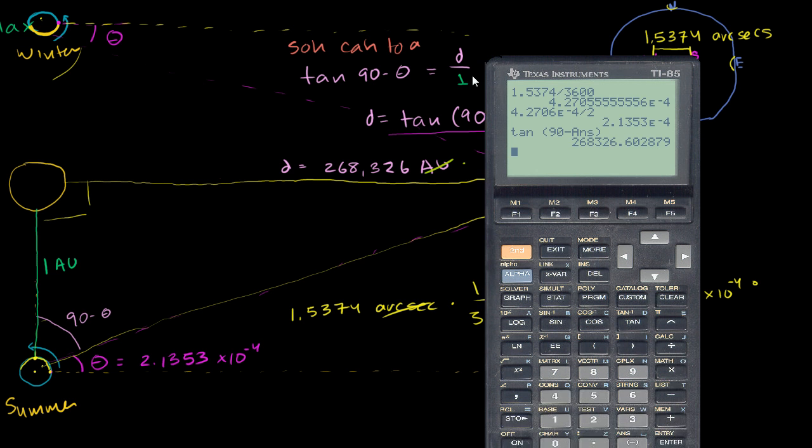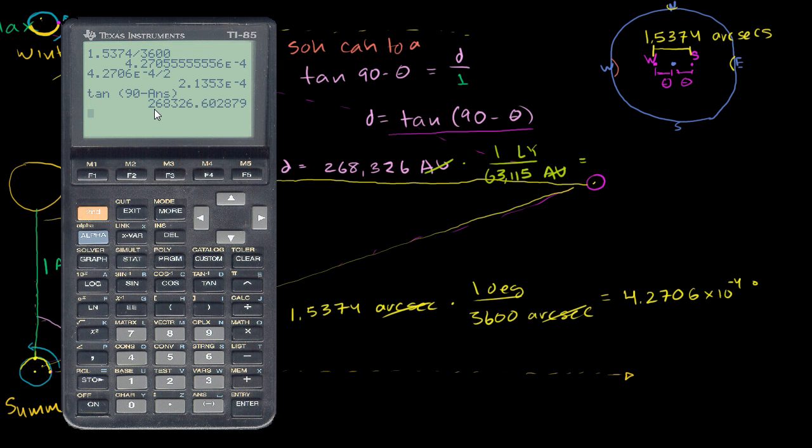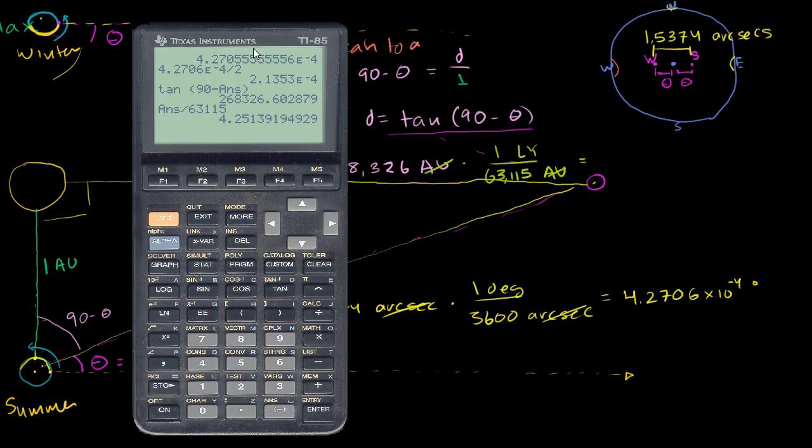So let's do that. So let's take this number that we just got, divided by 63,115, and we have it in light years. And so it's about 4.25 light years. I'm messing with the significant digits here, but just a roundabout answer. 4.25 light years.